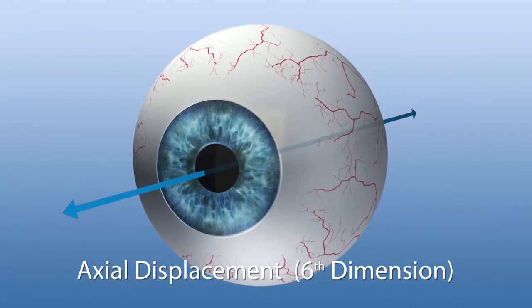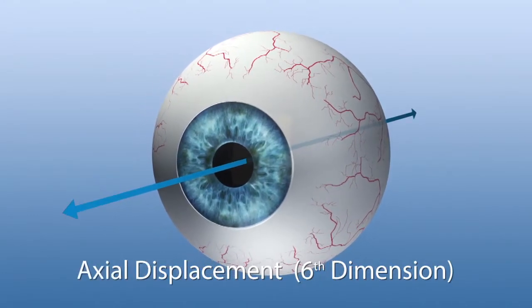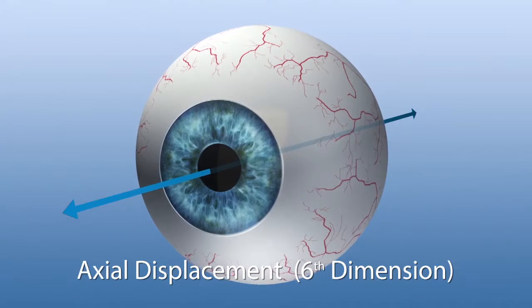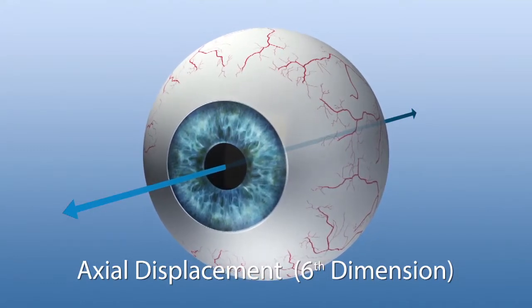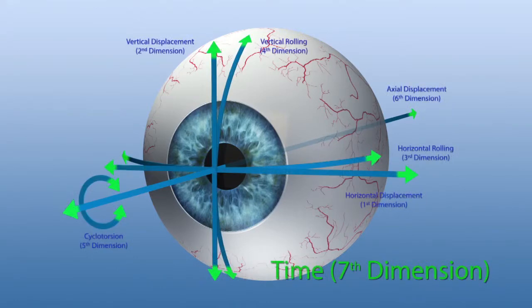The sixth dimension describes eye movements along the z-axis caused by upward or downward movements of the head or the eye. The seventh dimension is the time factor and has an impact on all other dimensions regarding compensation.